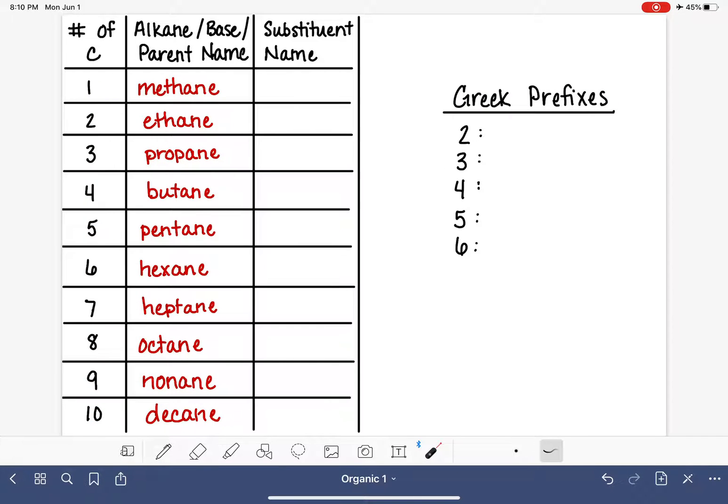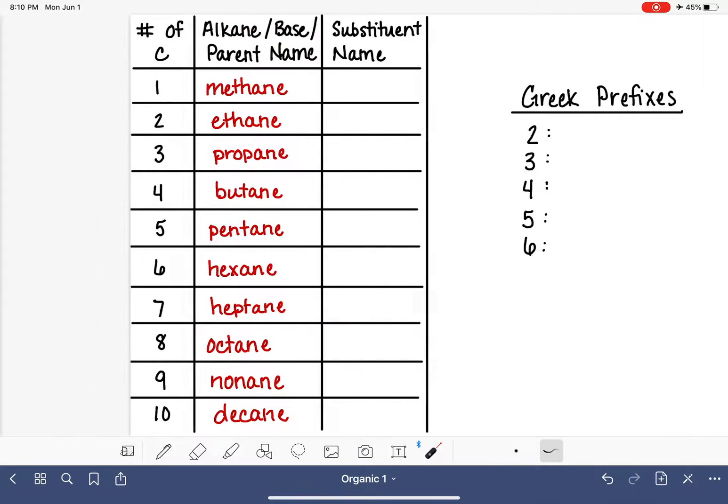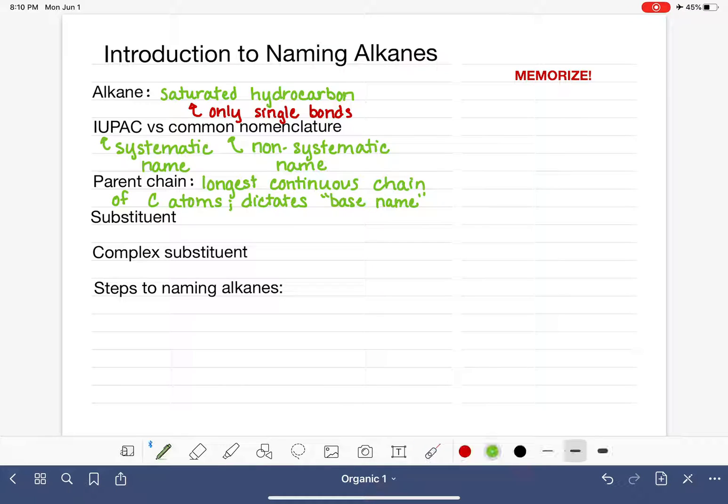I gave you a list of alkane names for 1 through 10 carbon atoms, and this is going to be the first thing on your list of things that you need to memorize in order to know how to name organic molecules. We need to memorize the names of the parent chains or alkanes that have 1 to 10 carbon atoms.